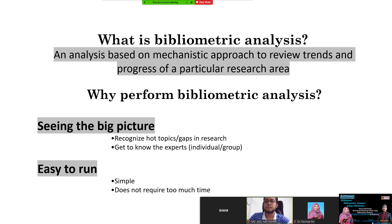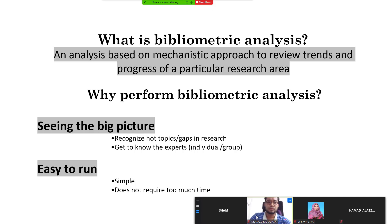So what is bibliometric analysis? Bibliometric analysis is an analysis based on a mechanistic approach to review trends and progress of a particular research area. Why perform bibliometric analysis? To see the big picture — meaning to recognize hot topics and gaps in the research, and to get to know the expert individuals or groups.